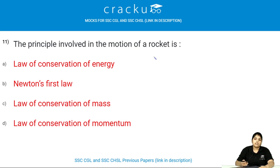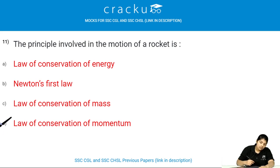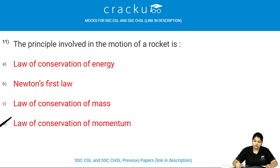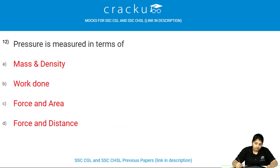The principle involved in the motion of a rocket is the law of conservation of momentum. The total momentum of two objects before a collision is equal to the total momentum of two objects after the collision. Pressure is measured in terms of force and area — pressure is defined as force per area.